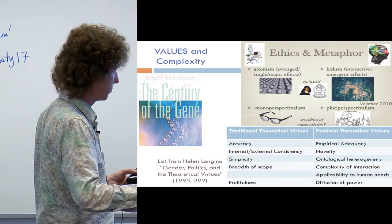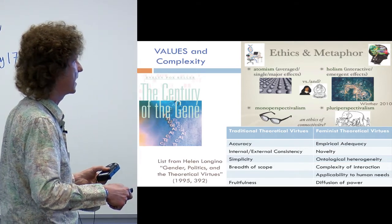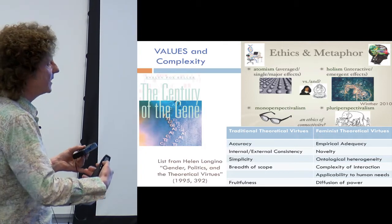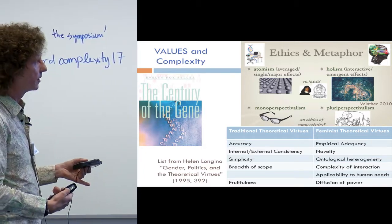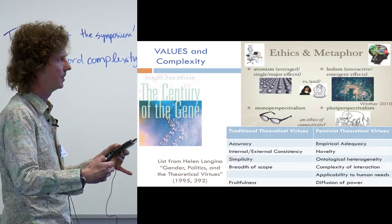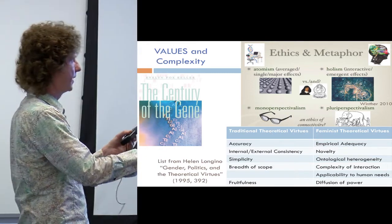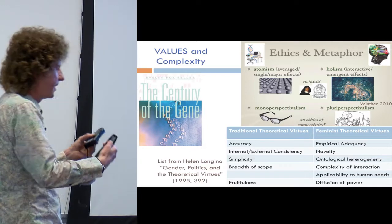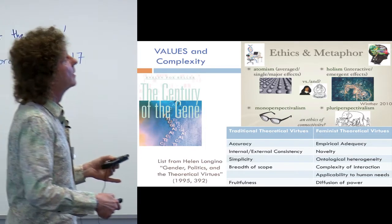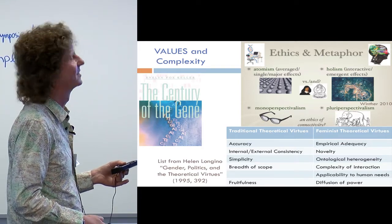Another important aspect of complexity is this idea of mono-perspectivalism versus pluri-perspectivalism. One reason I think complexity science is so important is that it really tries to tie together different perspectives and different ways of cutting up a system — imagining it in terms of networks — and multiple perspectives.